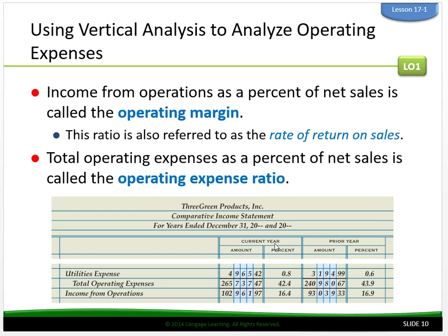Using vertical analysis to analyze operating expenses: income from operations as a percent of net sales is called the operating margin, also referred to as rate of return on sales. Total operating expenses as a percent of net sales is called the operating expense ratio. On 3Green's benchmark, the total operating expense ratio is between 40 and 42%. Its actual operating expense ratio has declined from 43.9% to 42.4%, which is a favorable trend. However, the current year's ratio is still higher than the target range, which is an unfavorable result. Therefore, 3Green's managers need to continue their efforts to decrease operating expenses.